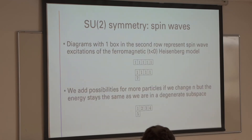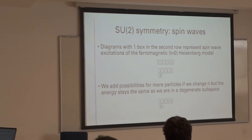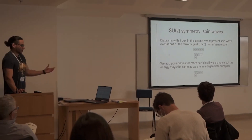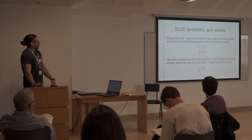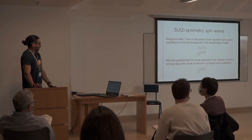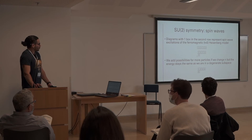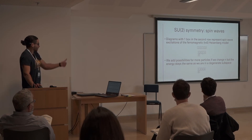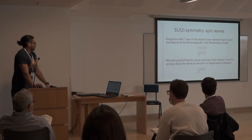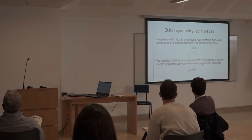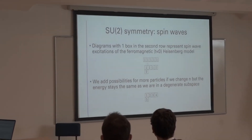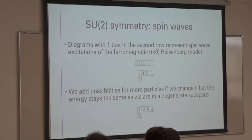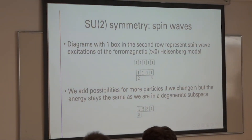If we take the number of flavors to be 2 we actually get the regular spin chain models — we can just rename spin up and spin down as 1 and 2. We know that the first excited states of the ferromagnet are spin waves, and I found that these diagrams actually correspond to spin waves where all spins point in the same direction except one. If we allow more particles in the system we can fill up this diagram with other particles, but this diagram and this diagram are in the same degenerate subspace and correspond to the same energy. This proves analytically that the first excited states of a ferromagnet where all particles are different are in the same subspace as spin waves.